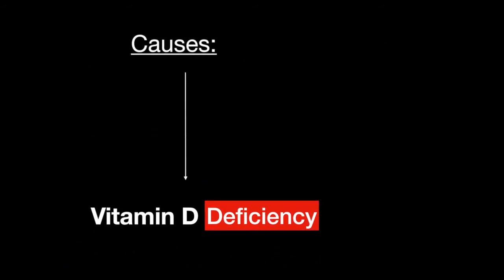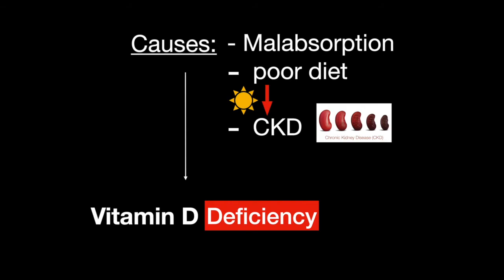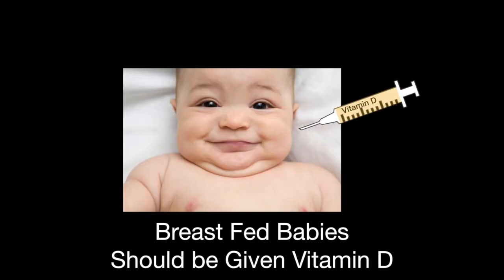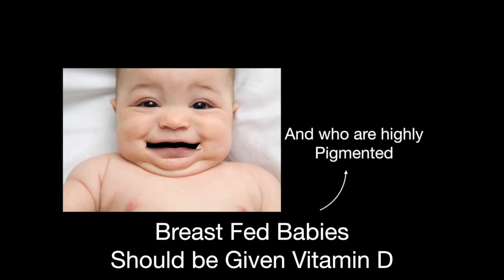Causes for a deficiency of vitamin D3 include malabsorption from the digestive tract, a poor diet, low sun exposure, chronic kidney disease, and advanced liver disease. Oral vitamin D should be given to breastfed infants to prevent a deficiency. Infants with high pigmentation or who are born prematurely have more severe symptoms of a vitamin D deficiency.